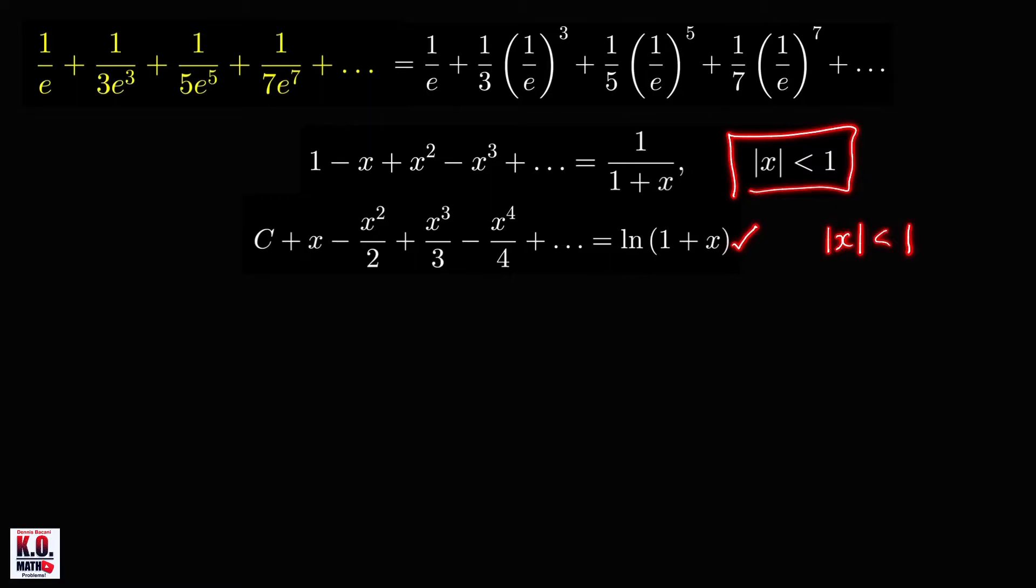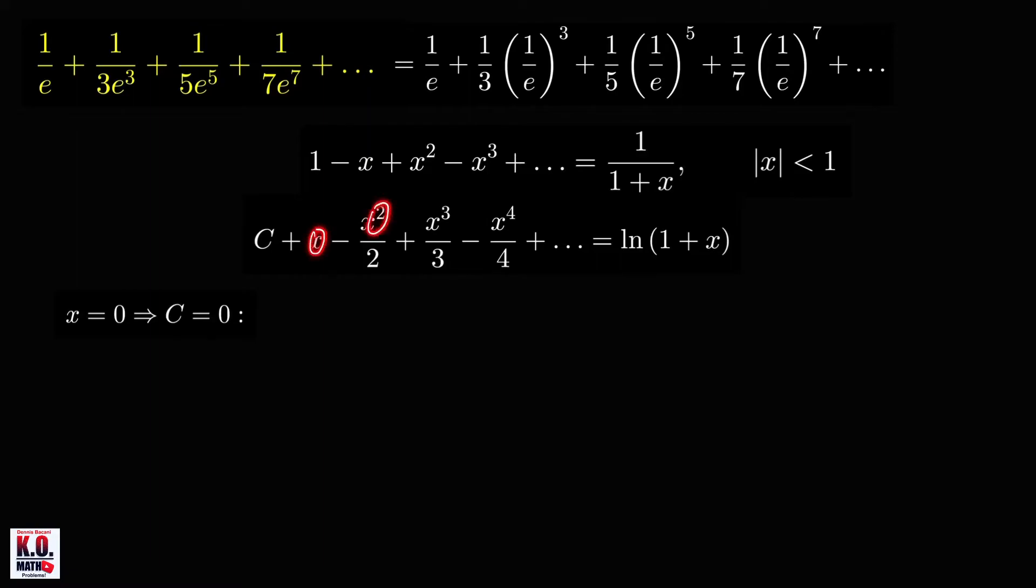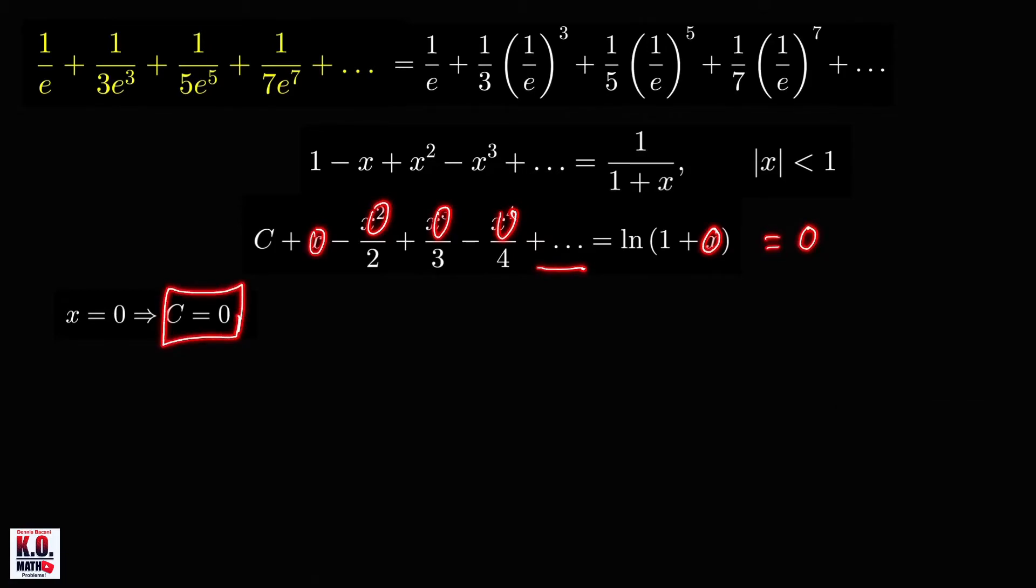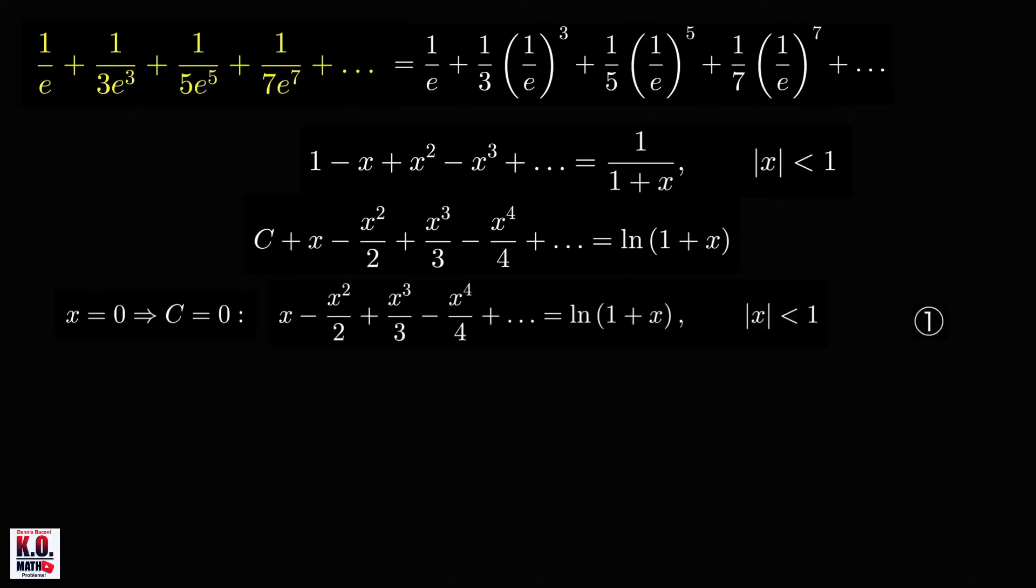And to find the value of this constant C here, we can set the value of x to be equal to zero, and that will give us C equal to zero. So if you plug in zero here, zero, zero, zero, and so on, so series of zeros, and then ln of 1 plus zero, that is ln of 1, which is equal to zero. So therefore, C is equal to zero, and we obtain the following equation.